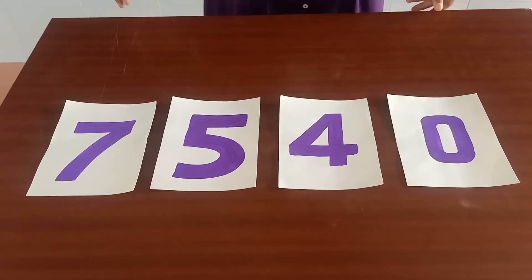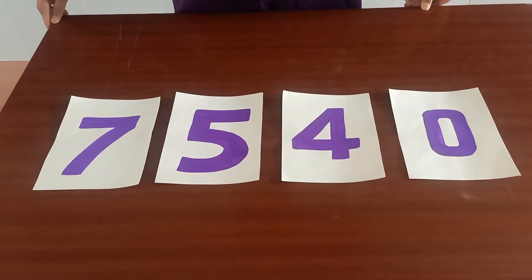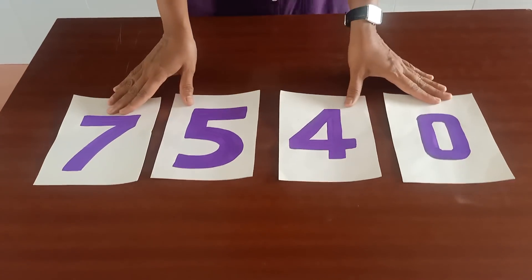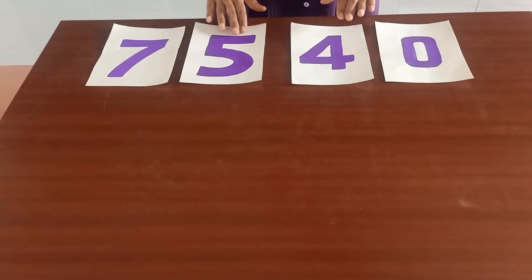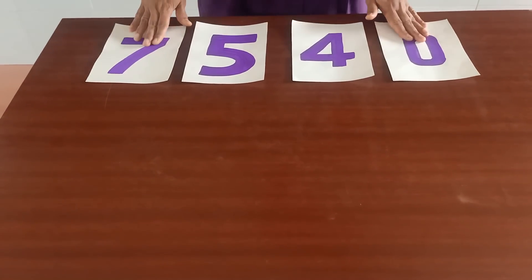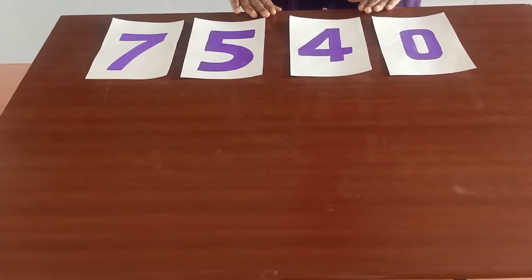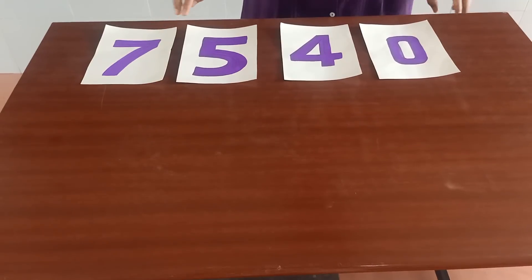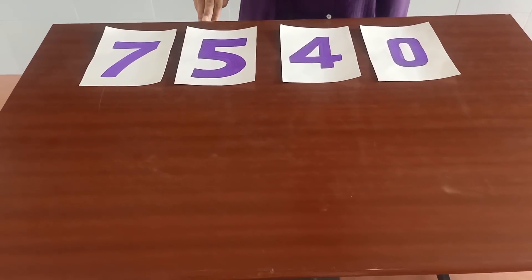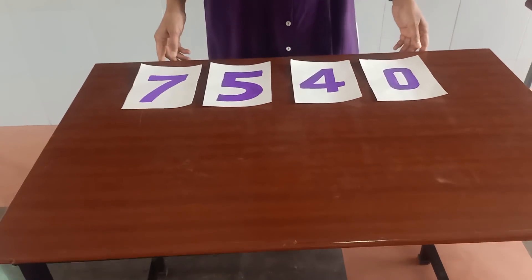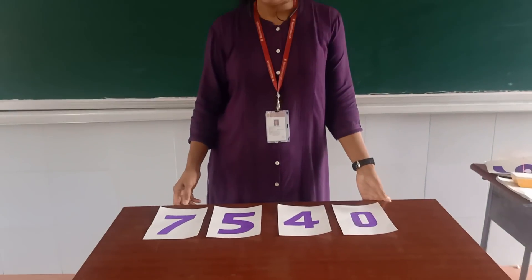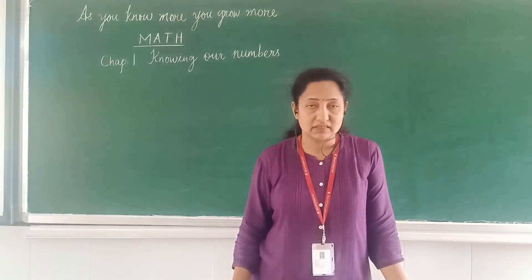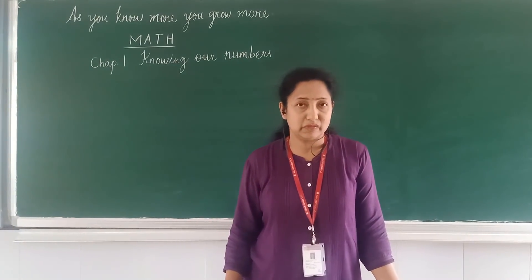Now the second thing is, you have to form the smallest number using the same digits. Let's do it again. Now, what do you think? Which is the smallest one-digit number — 0 or 1? Think and decide. This is the smallest one-digit number — 0 or 1?